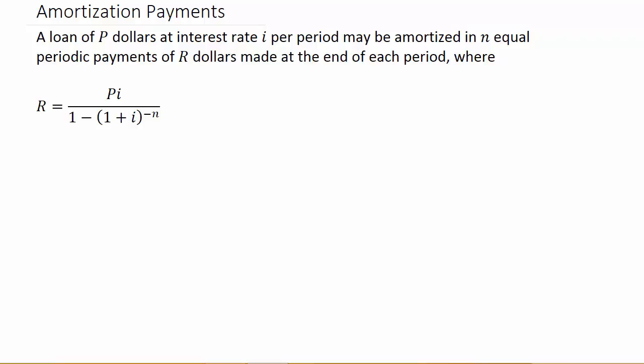A loan of P dollars at interest rate i per period may be amortized in n equal periodic payments of R dollars made at the end of each period. This is amortization payments - like if you get a loan for a house, what are your monthly payments going to be? The formula is R equals P times i over 1 minus 1 plus i to the negative n.